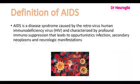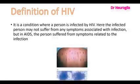The definition of AIDS: AIDS is a disease syndrome caused by the retrovirus human immunodeficiency virus, the HIV, and characterized by profound immunosuppression that leads to opportunistic infections, secondary neoplasms, and neurologic manifestations. The definition of HIV: it is a condition where a person is infected by HIV. The infected person may not suffer from any symptoms associated with infection, but in AIDS, the person suffers from symptoms related to the infection.